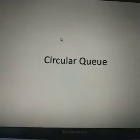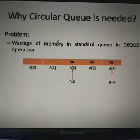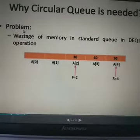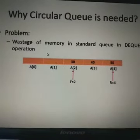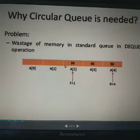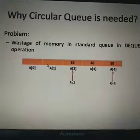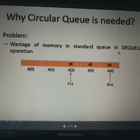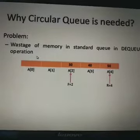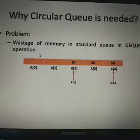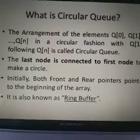Next we discuss the circular queue. First of all we need to know why we use the circular queue, or why the circular queue is needed. The main problem in the simple queue — the simple array representation — is that when we insert elements and then remove some elements from the front, there is wastage of memory. In the dequeue operation, when we perform deletion, blank spaces are left behind, causing wastage of memory. To remove this wastage of memory we use the circular queue arrangement.